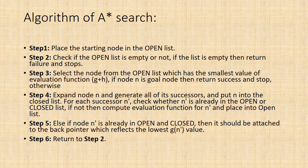Step 4, expand node n and generate all of its successors, and put n into the closed list. For each successor n, check whether n is already in the open or closed list. If not, then compute evaluation function for n and place into open list. Step 5, else if node n is already in open and closed, then it should be attached to the back pointer which reflects the lowest g(n) value. Step 6, return to step 2.